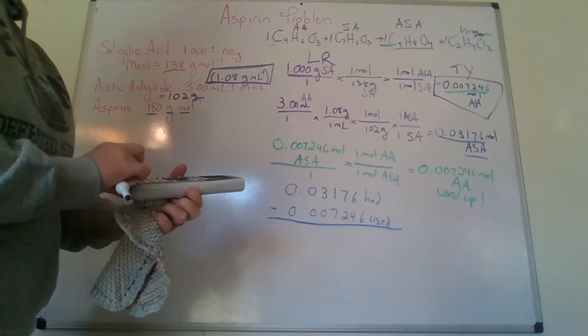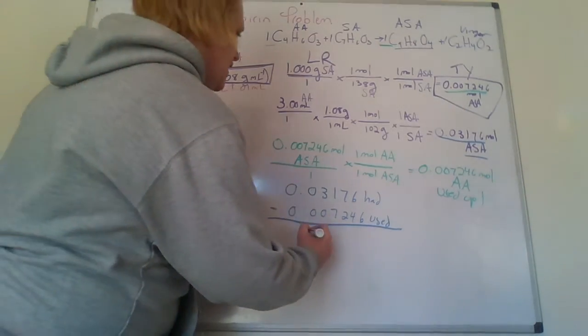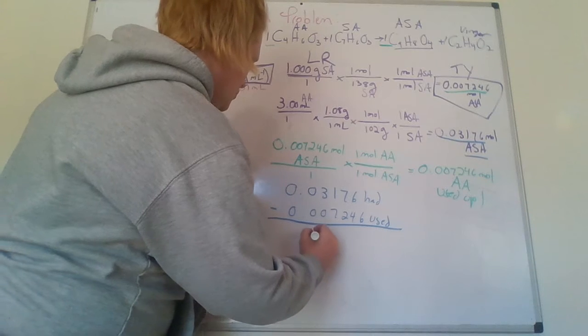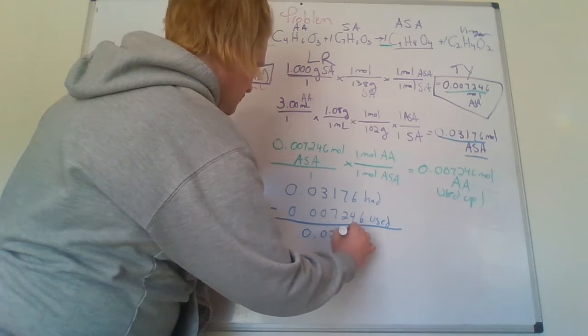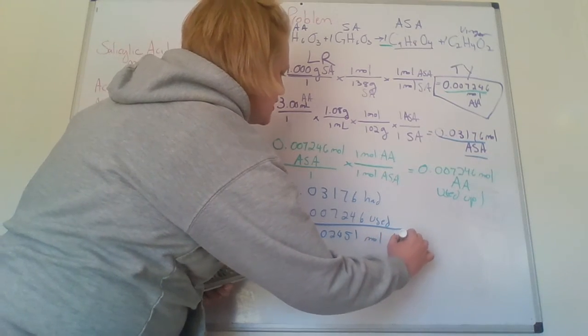0.03176 minus 0.007246, I would have left over 0.02451 mole of anhydride.